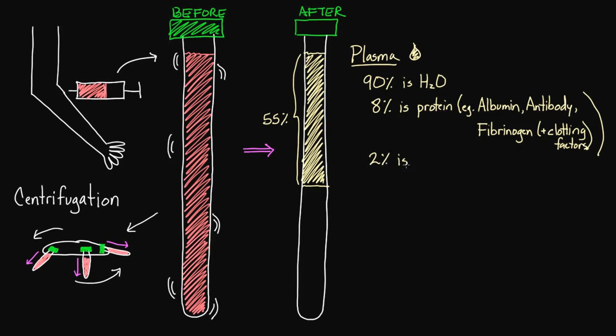Now we've still got 2% to account for. And this is going to be things like hormones, for example, and that could be something like insulin. We've got electrolytes, that could be something like sodium. And we've got also nutrients, that could be something like glucose. So these things all make up your plasma. So a lot of the things that we talk about are all in your plasma, including vitamins and things like that.